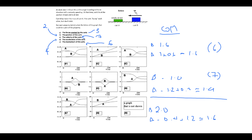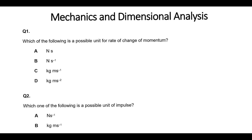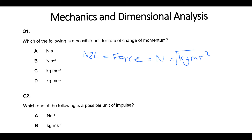So let's move on to the dimensional analysis part of this task. Let's do some dimensional analysis with Newton's laws: which of the following is a possible unit for the rate of change of momentum? Hopefully you recognize Newton's second law here — the rate of change of momentum is a force, measured in Newtons, which is kilogram meters S to the minus two. So that's going to be D.